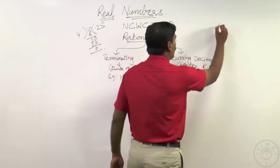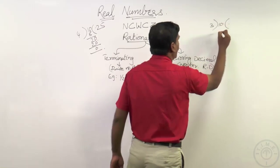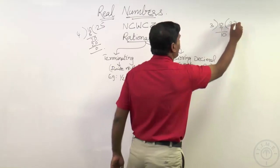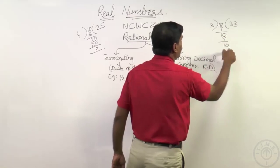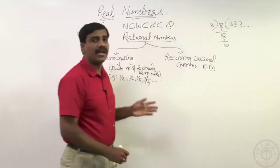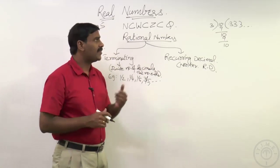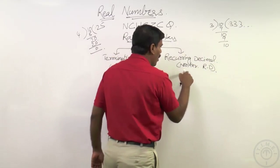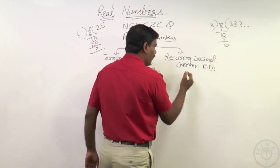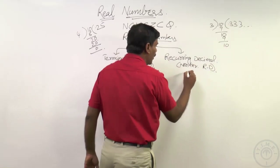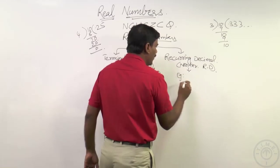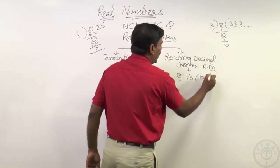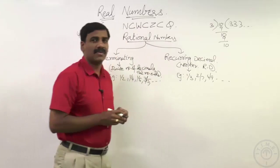For example, one by three: one divided by three — placing the decimal point, ten divided by three goes three times giving nine, leaving one. Bringing down zero, again it goes three times giving nine, leaving one — and this continues forever with no end. Such a decimal we consider as a recurring decimal. Examples of recurring decimals: one by three, two by five, two by seven, four by nine.